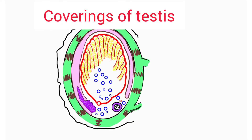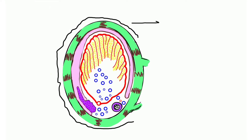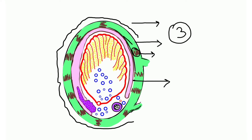Next, the coverings of the testes. Starting from the scrotal layer: skin, then external spermatic fascia, then the cremaster fascia and cremaster muscle, and the internal spermatic fascia. Inside these, there are three important layers of the testes itself. The outer layer is the tunica vaginalis, which is a serous sac with two layers — the outer parietal layer and the inner visceral layer. Clinical correlation: increased fluid in the tunica vaginalis causes hydrocele.